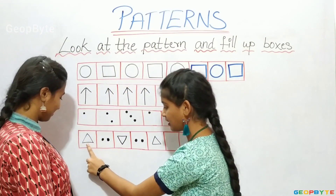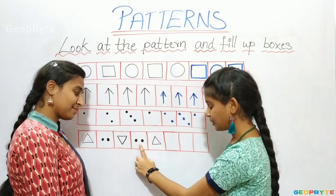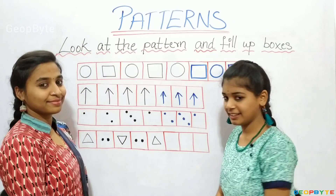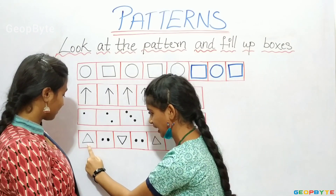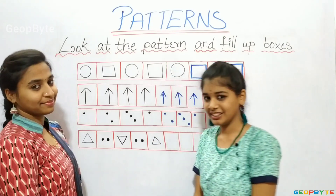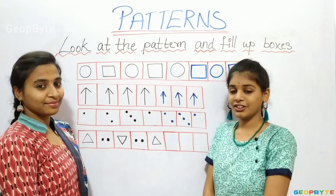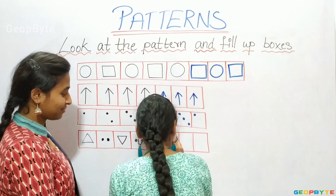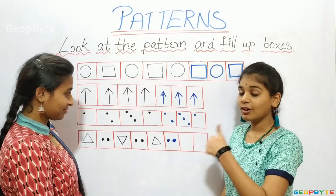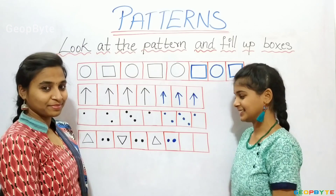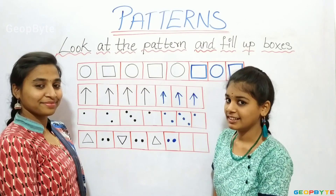Now see here: triangle, two dots, upside-down triangle, two dots, triangle. What comes after triangle? Let us see. After triangle, there are two dots. So after triangle, there will be two dots. Let us draw. After two dots, what comes? Let us see. After two dots, there is an upside-down triangle. Let us draw.